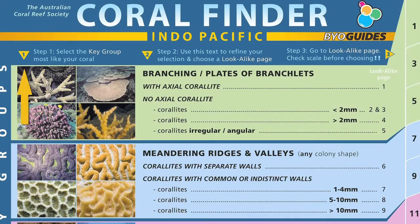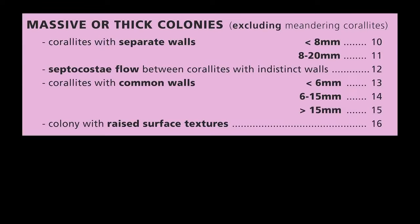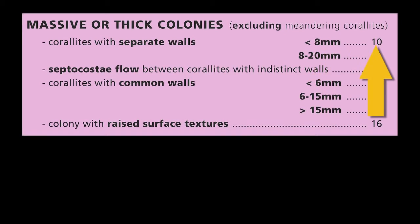The Coral Finder uses a three-step process: choose a key group, then choose a look-alike page, go to that look-alike page, compare and confirm characters, and check the scale. Once you have chosen the key group, you then need to choose a look-alike page. You can do this by consulting the plain language prompts which may ask you to judge the scale or some visual features of the coral. This gives you the look-alike page number to check out.